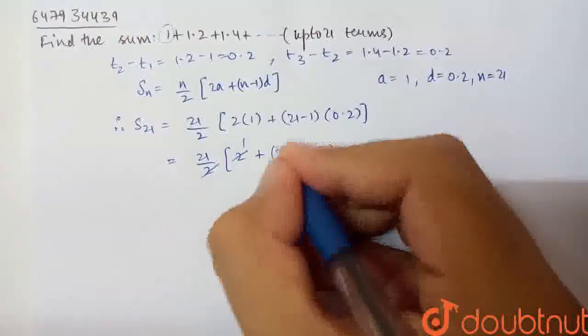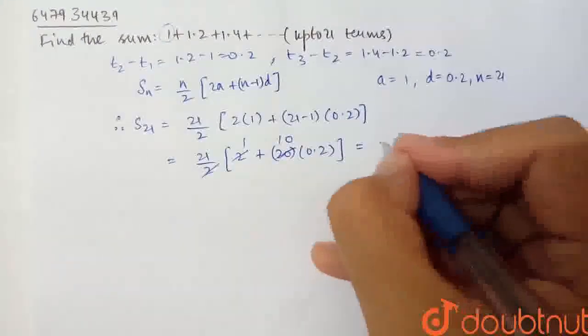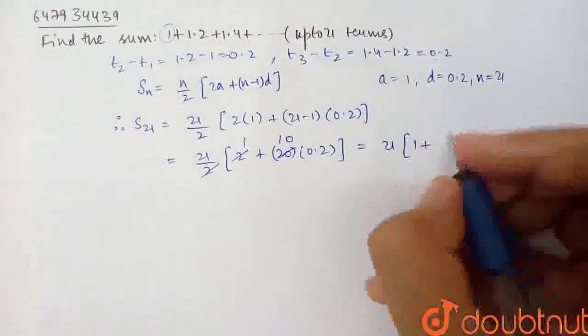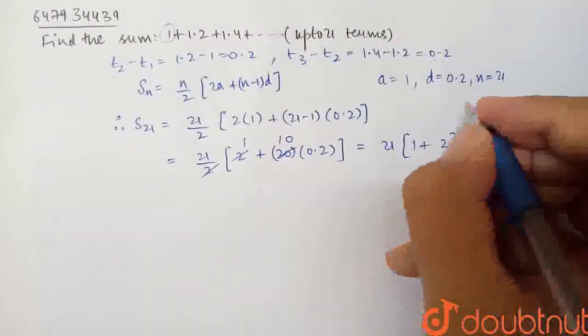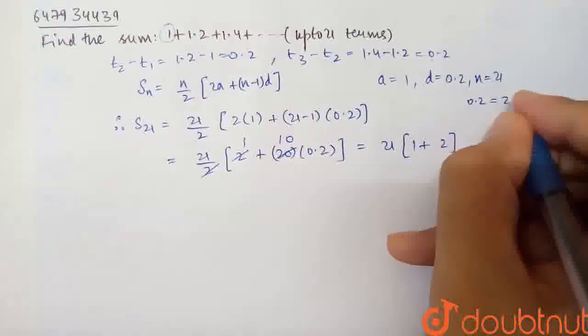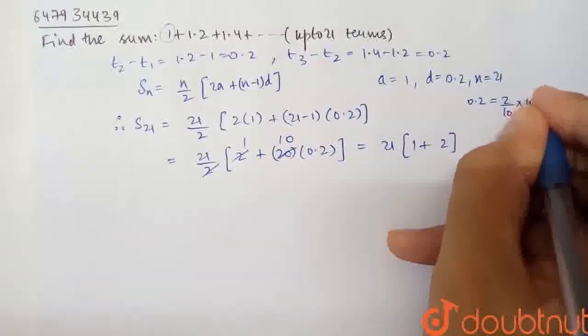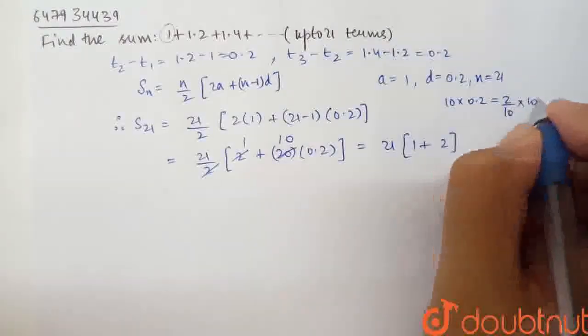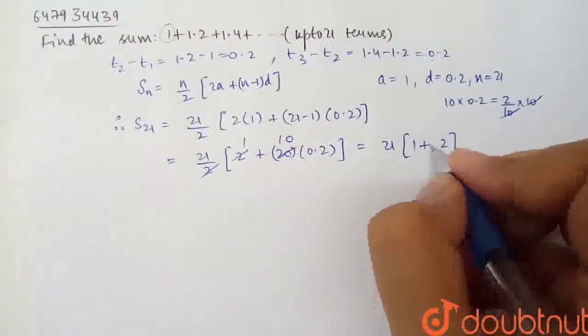If 2 cancels out, this is 1, and this becomes 10. So, 21 × (1 + 10×0.2). Now, 10×0.2 equals 2. So we simplify to 21 × (1 + 2), which is 21 × 3.